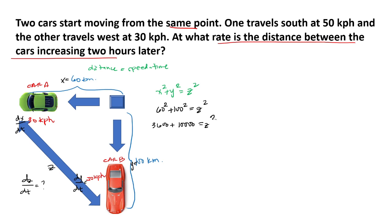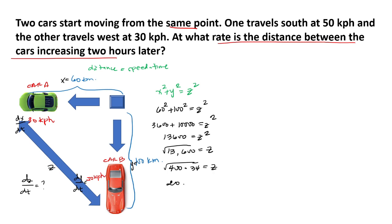So we have 13600 equals z squared. Taking the square root of both sides, we get the square root of 13600. We can factor this as 400 times 34, so z equals 20 square root of 34 kilometers.